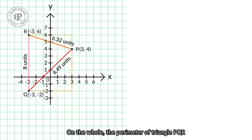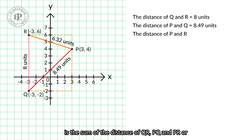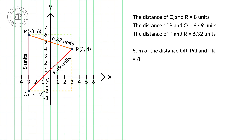On the whole, the perimeter of triangle PQR is the sum of the distances of QR, PQ and PR, or 8 plus 8.49 plus 6.32, which equals to 22.81 units.